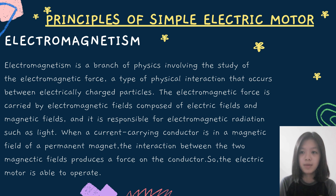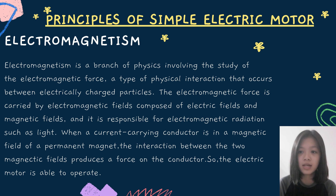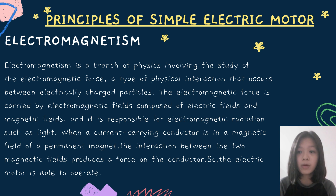The principle of the simple electric motor is electromagnetism. Electromagnetism is a branch of physics involving the study of the electromagnetic force, a type of physical interaction that occurs between electrically charged particles. The electromagnetic force is carried by an electromagnetic field composed of electric field and magnetic field, and it is responsible for electromagnetic radiation such as light. When a current-carrying conductor is in the magnetic field of a permanent magnet, the interaction between the two magnetic fields produces a force on the conductor.